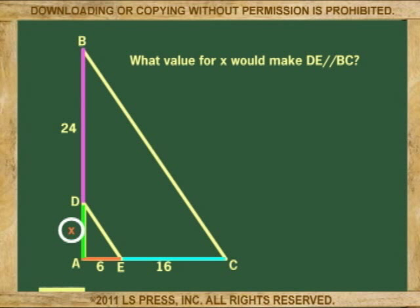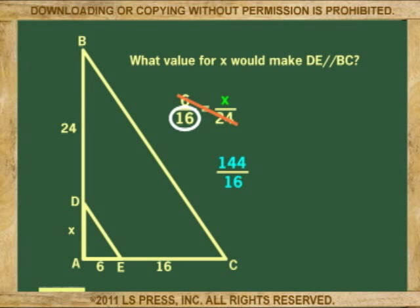So, we set up ratios: AE is to CE, and x is to BD, where AE is 6, CE is 16, and BD is 24. Solving for x, we cross multiply 6 times 24, which is 144. The result we divide by 16. 144 divided by 16 is 9. X is 9.